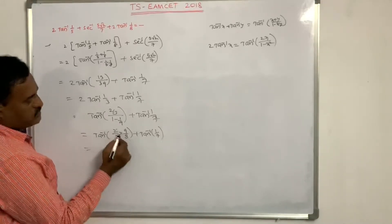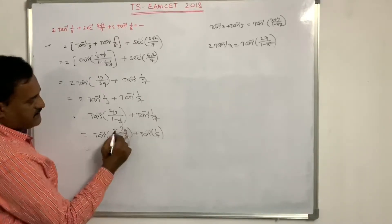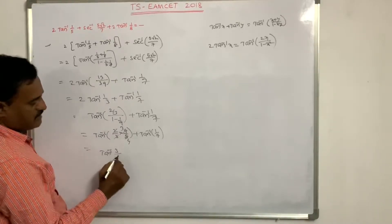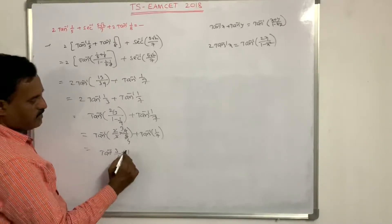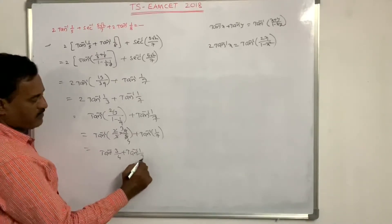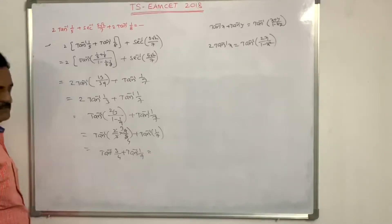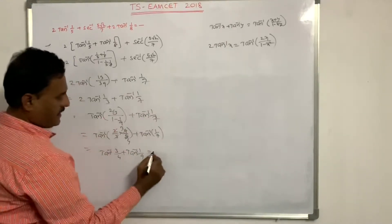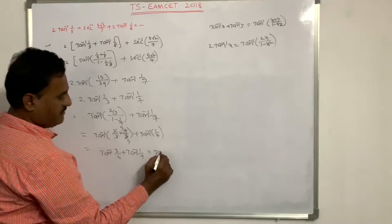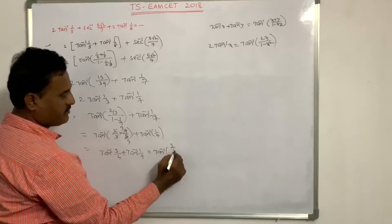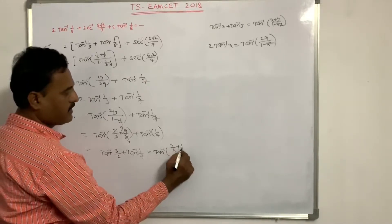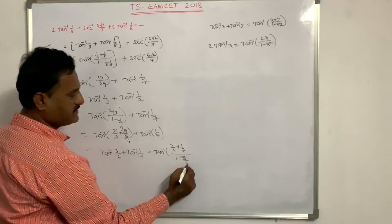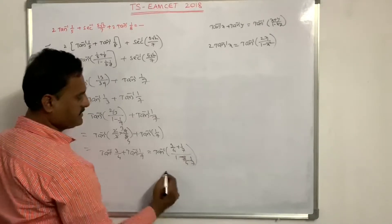Simplifying: 4 times cancelled and 3 times cancelled gives tan⁻¹(3/4) + tan⁻¹(1/7). Applying the addition formula again: tan⁻¹[(3/4 + 1/7) / (1 − 3/4·1/7)].